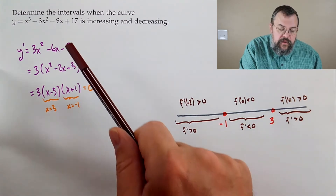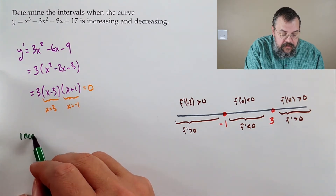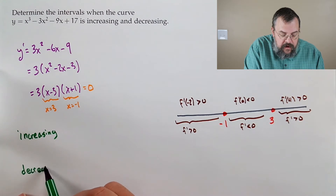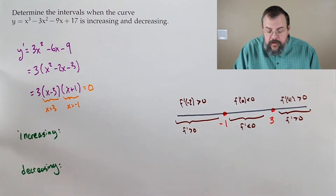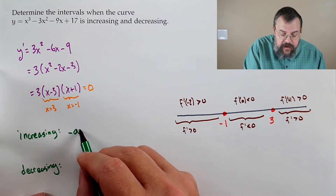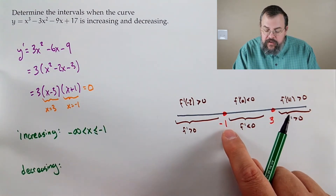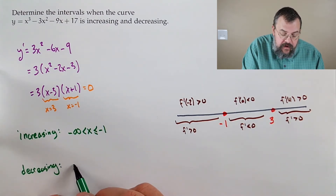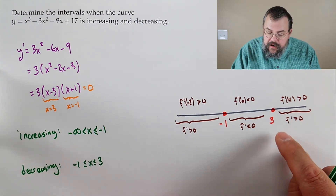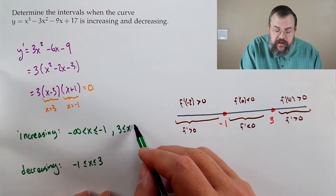Our goal was the intervals. For increasing, we're increasing up to negative 1: negative infinity less than x less than or equal to negative 1. For decreasing, that's negative 1 to 3: negative 1 less than or equal to x less than or equal to 3. And after 3 we're back to increasing: 3 less than or equal to x less than infinity.